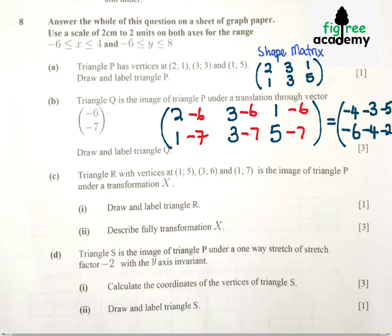Then we draw and label. Then we are given these coordinates 1, 5, 3, 6, and 1, 7 is the image of triangle P under its transformation X.